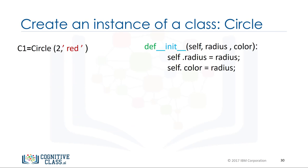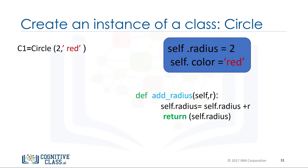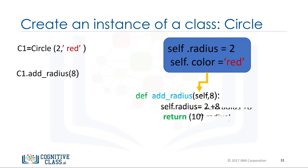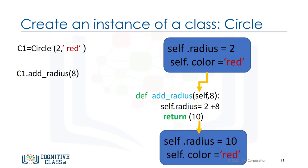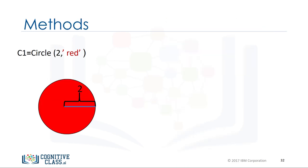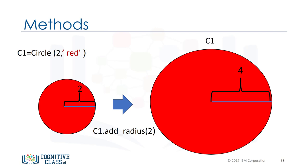Let's see how this works when we create an object and call the add_radius method. We create an object with the constructor, setting radius to 2 and color to red. In the constructor's body the data attributes are set. We call the method by adding a dot followed by the method name in parentheses — the argument is the amount we would like to add. We do not need to worry about the self parameter when calling the method; Python takes care of that. Internally the method is called with the value 8 and the proper self object, and assigns a new value to self.radius, changing the radius data attribute.